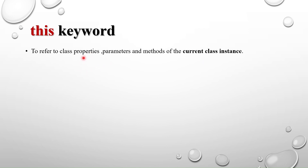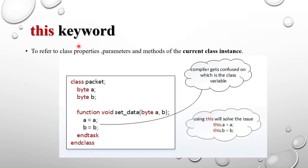Whenever the class properties and the arguments passed to the function are the same, the compiler doesn't understand which variable is the class variable and which is the argument. This ambiguity is resolved by the 'this' keyword — it resolves the ambiguity of the compiler when the properties of the class and the arguments passed to the methods are the same.